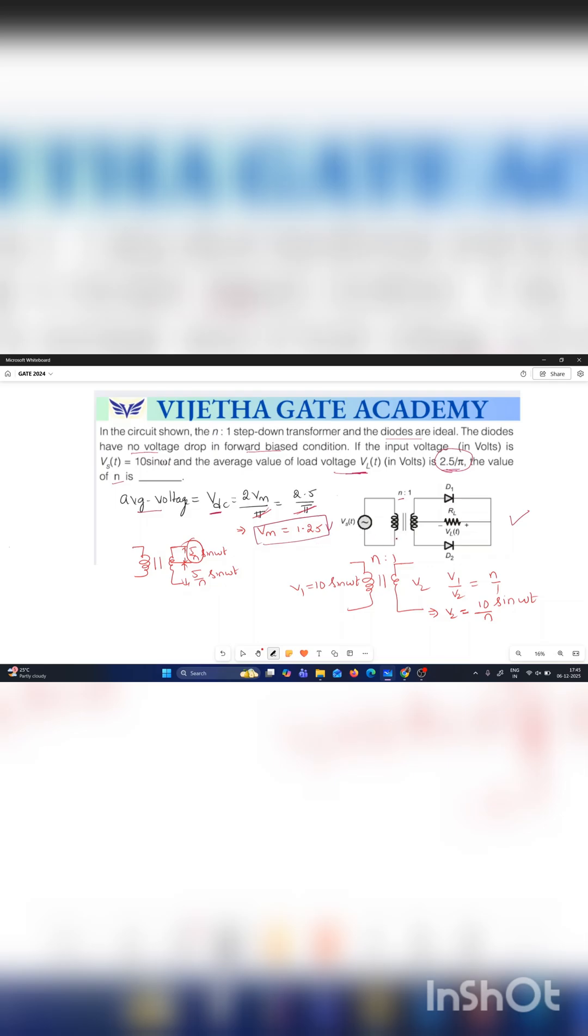Now let us solve the voltage across secondary winding. This is the primary winding and this one is secondary winding. We are applying 10 sin omega t across the primary winding. The voltage across secondary winding is directly proportional to the number of turns. So V1 by V2 is equal to n by 1. After substituting V1 equals 10 sin omega t, you will get V2 equals 10 by n sin omega t. This is the voltage across the secondary winding.